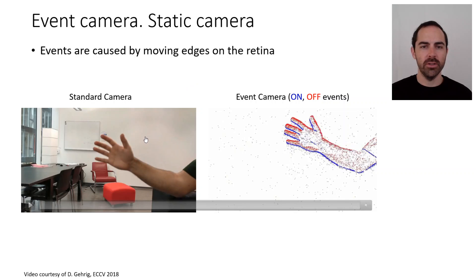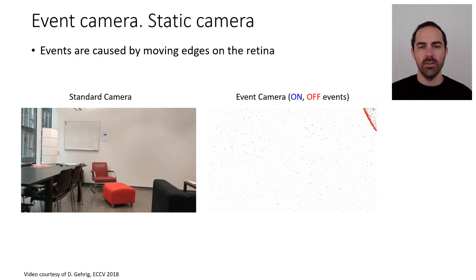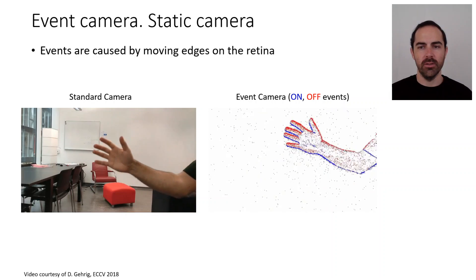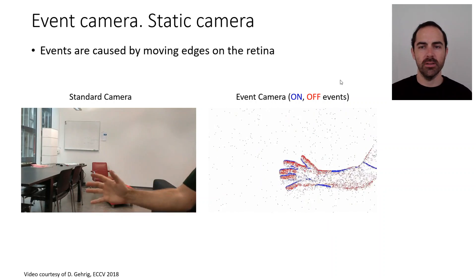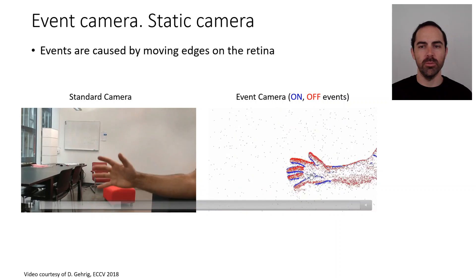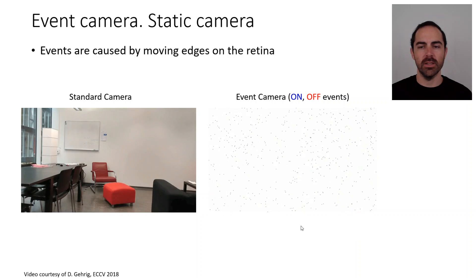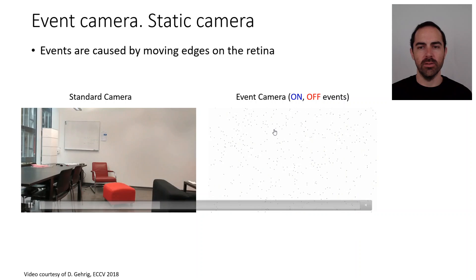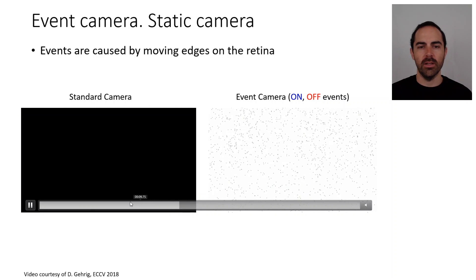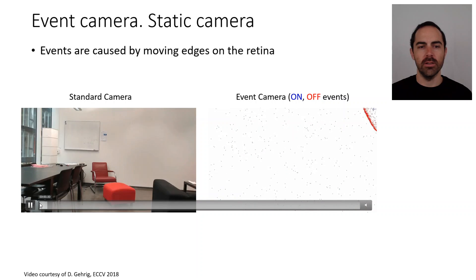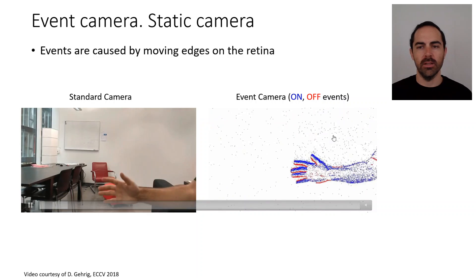We are comparing on the left the output of a standard camera and on the right is the output of an event-based camera in the case of a static camera. In this case, most of the output of the camera comes from the moving objects.